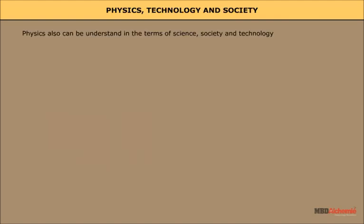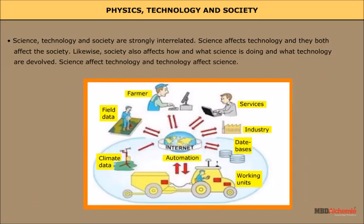Physics, Technology and Society. Physics also can be understood in the terms of science, society and technology. Science, technology and society are strongly interrelated. Science affects technology and they both affect the society. Likewise, society also affects how and what science is doing and what technology are developed.